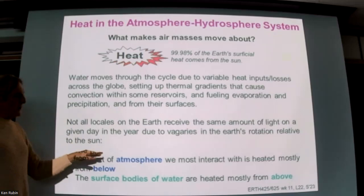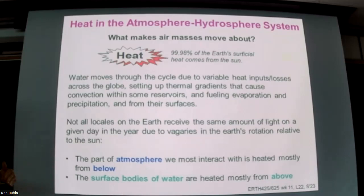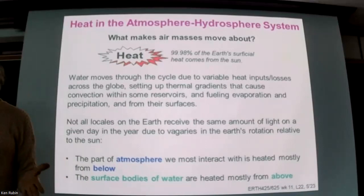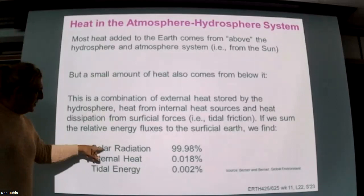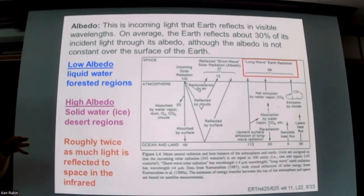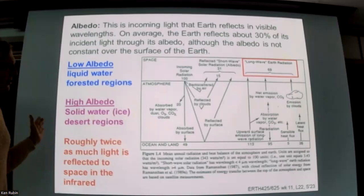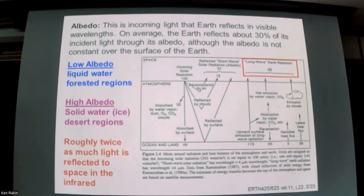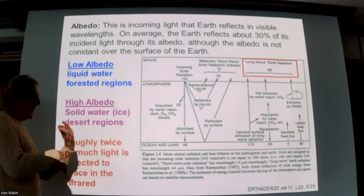Bodies of water are heated from above by sunlight impinging on their tops, whereas the atmosphere is heated from below. This is what helps set up convection. This is a heat budget from the perspective of solar radiation: 100 units of solar radiation coming in at visible wavelength. Ultraviolet is not on here — ultraviolet will become important when we talk about photochemistry related to ozone destruction and smog.